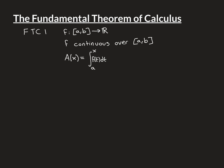We'll begin by stating both the first and second parts and then prove them. For the first Fundamental Theorem of Calculus (FTC1), the setup is as follows: we have a real-valued function defined over a closed interval [A, B], and we assume that F is continuous everywhere over that closed interval. We've proven previously that any function continuous over a closed bounded interval is Riemann integrable over that interval.